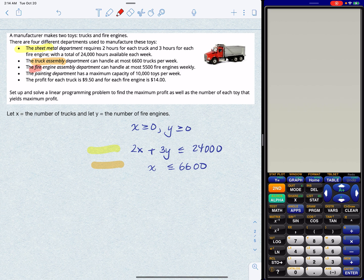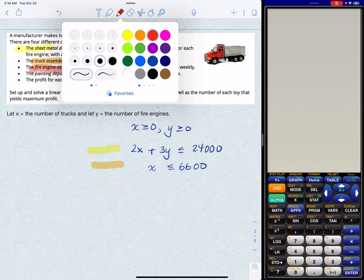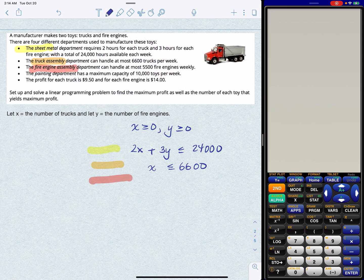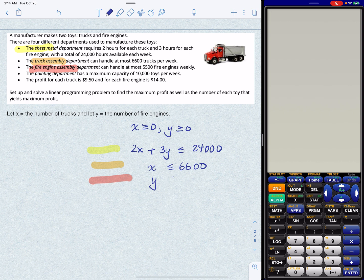Okay. Next one only has to do with fire engines. Now we're told that we can handle at most 5,500 fire engines. So again, just color coding these so it's easier to read. I know that y is less than or equal to 5,500.